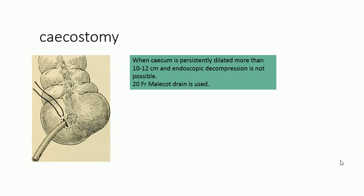Cecostomy is another treatment option. When the cecum is persistently dilated greater than 10 to 12 centimeters and endoscopic decompression is not working, a skin opening is made into the cecum and a drain — a 20 French Malecot drain — is placed. This drain removes the contents inside the cecum, allowing it to return from an overdistended state to normal.